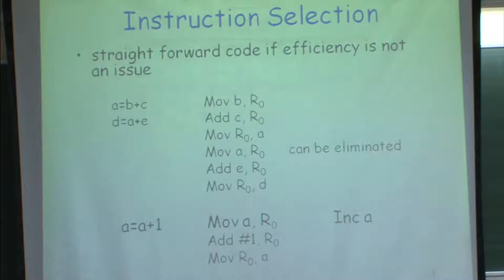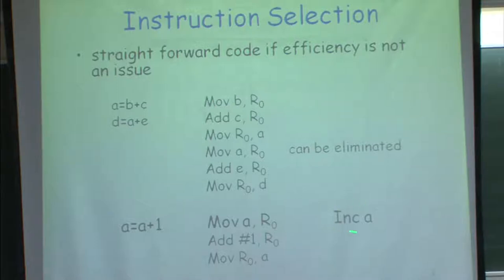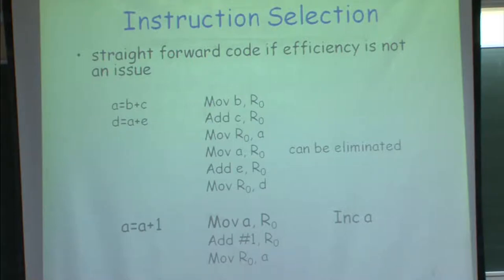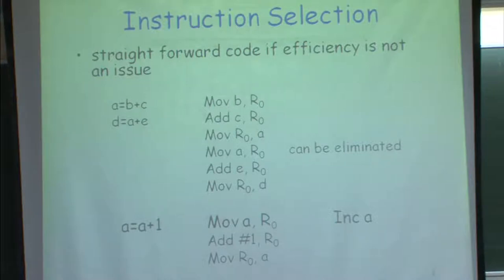If I have an instruction like incrementing A by 1, I may generate: move A to R0, add immediate 1 to R0, store R0 to A. But many machines provide a single increment instruction. On some machines, if A is in memory, increment may not be allowed — only if A is in a register. If A is already in a register as a loop counter, using increment instead of add is much faster because it is a single instruction with fewer fetches.